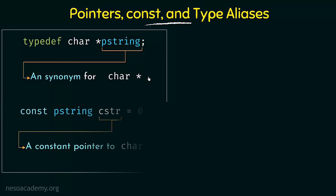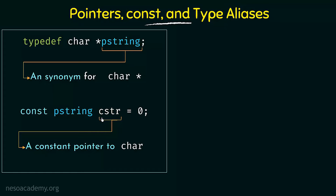Next we have: const pstring cstr = 0. Here we are declaring cstr, which is actually a constant pointer to a character. We don't see the words 'character' or 'pointer' written explicitly, but pstring is a synonym for char*, so this declaration means cstr is a constant pointer to a character.